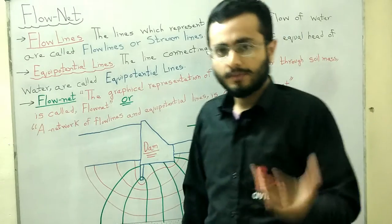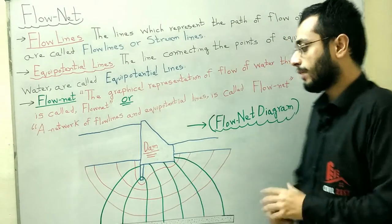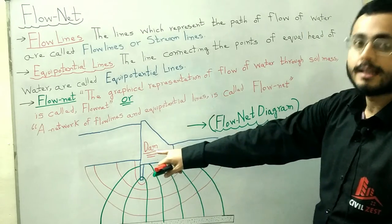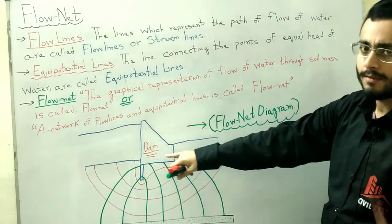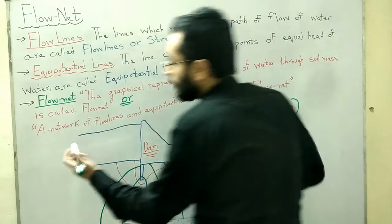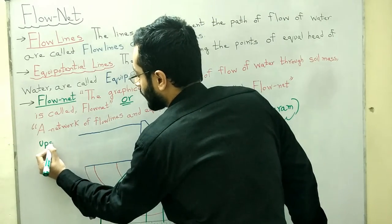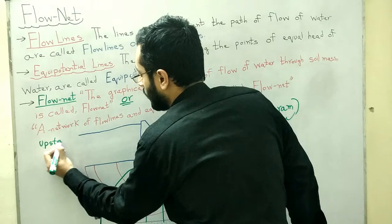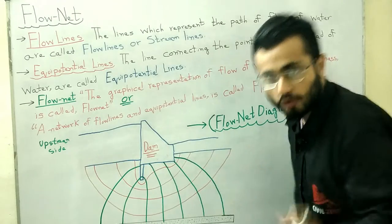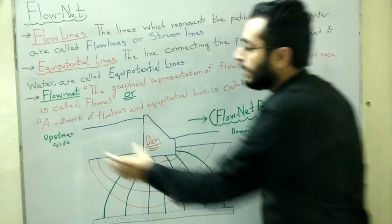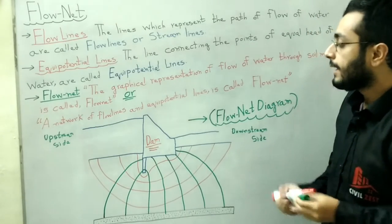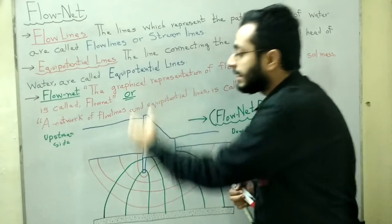Let us explain the concept with a diagram. This is basically a flow net diagram. Here is a concrete dam — also called an earth dam or gravity dam. This side is the upstream side, and this side is our downstream side.